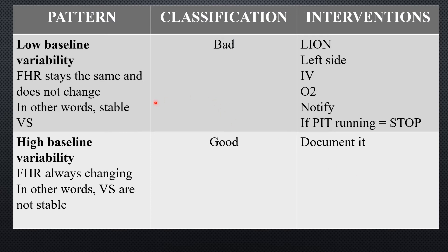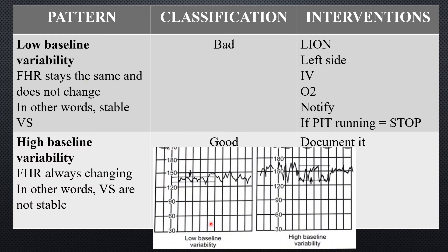Low baseline variability means the fetal heart rate is the same — not changing. If vital signs are stable in a fetus or mother, the fetal heart rate staying the same is bad. Low baseline variability is a bad classification. Intervention: follow LION PIT — Left side, IV fluids, O2, notify MD, and stop Pitocin or Oxytocin if running.